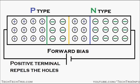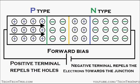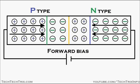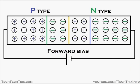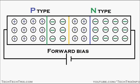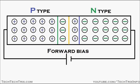The positive terminal repels the holes in the P region, and the negative terminal repels the electrons towards the junction in the N region. A pressure is acting towards the junction, and this results in the junction shrinking.